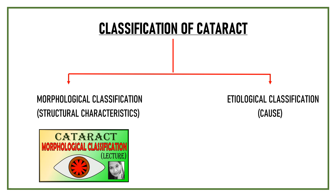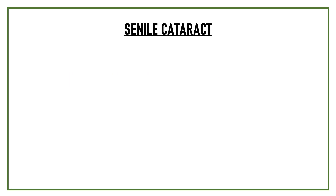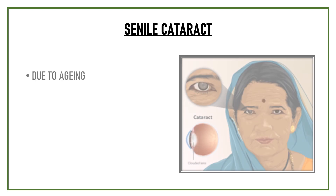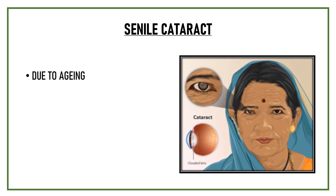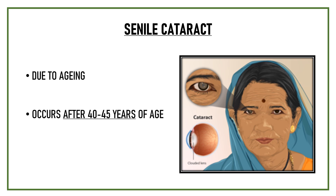The most common type of cataract that is seen is senile cataract. Senile cataract refers to a cataract that develops as part of the aging process, which usually occurs after 40 to 45 years of age.